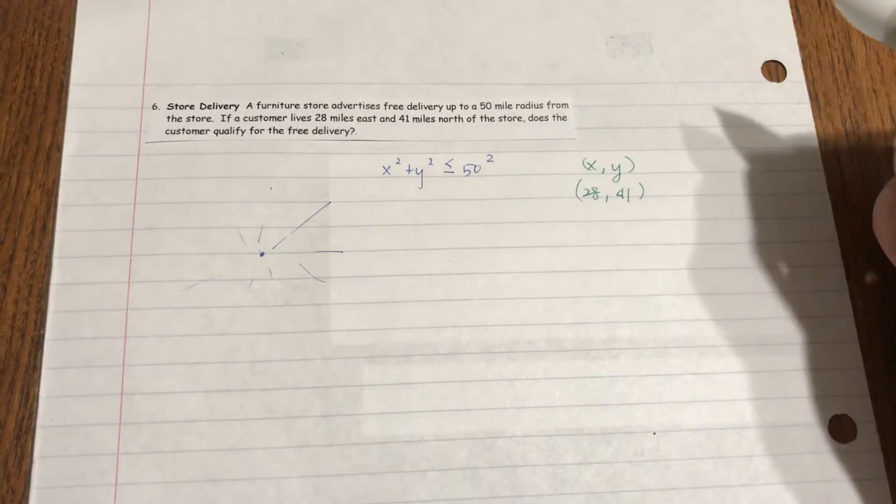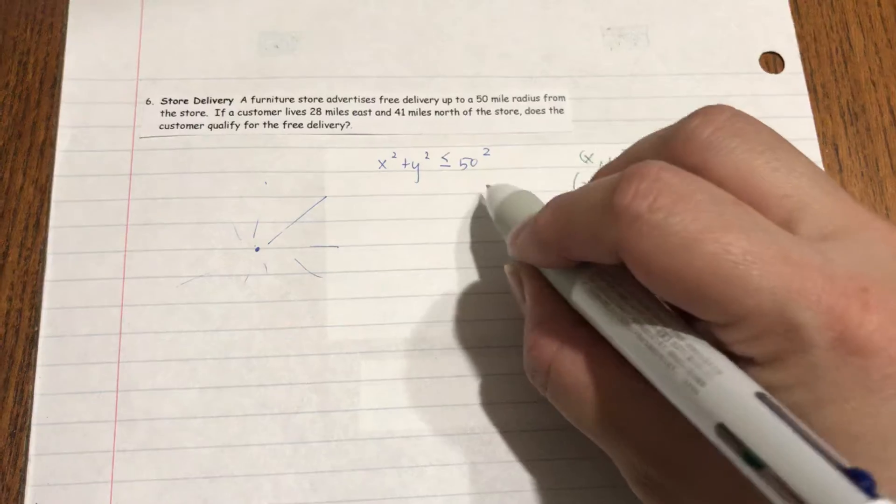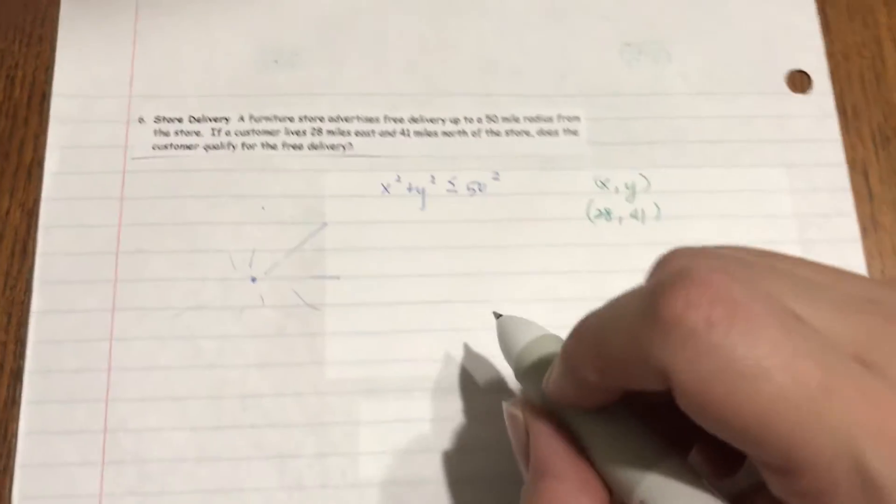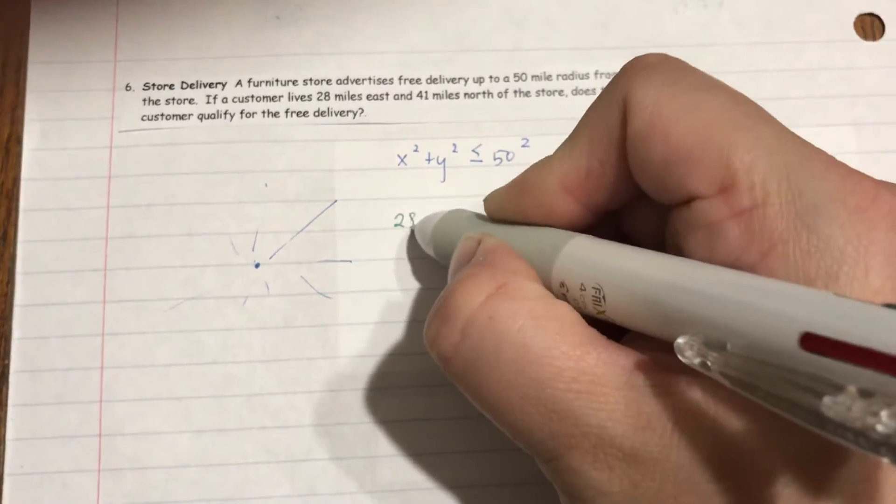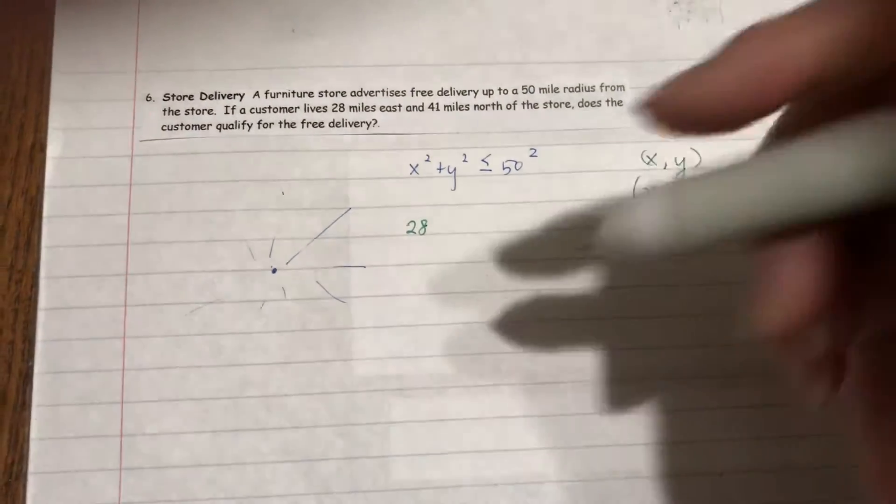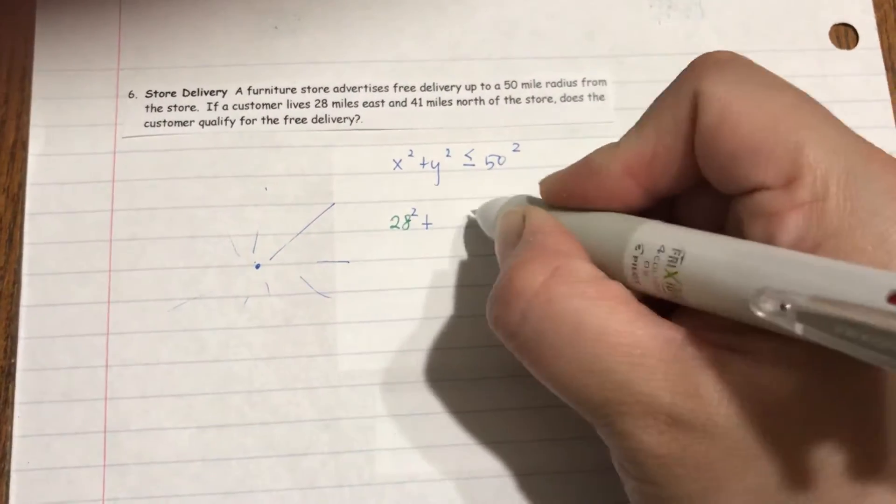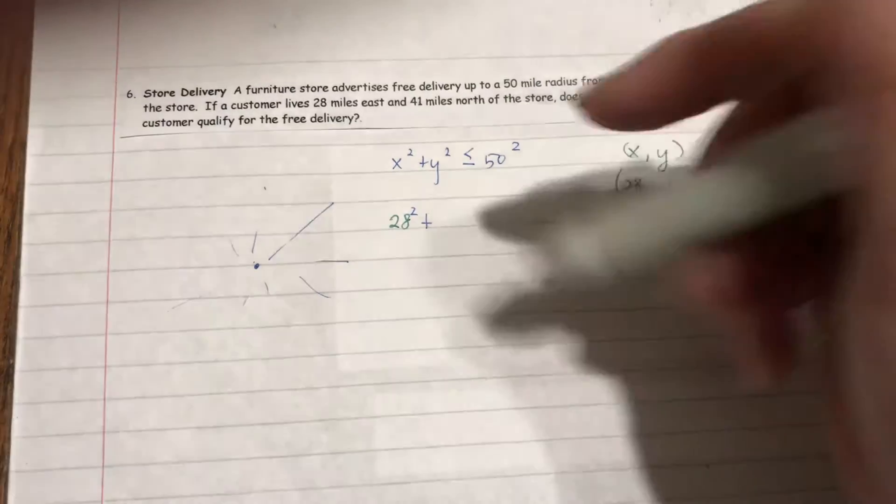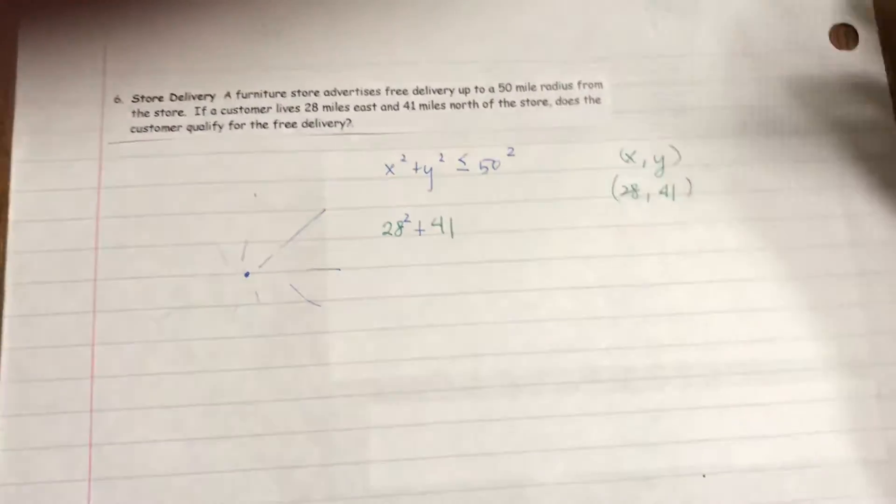Very similar to number 4, we're going to plug them in and see if it is truly less than 50 squared. Let's work this out. We get 28 squared plus 41 squared.